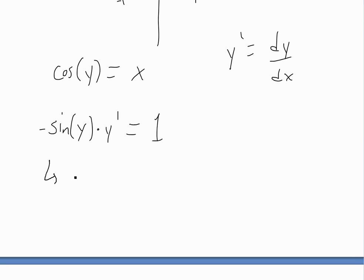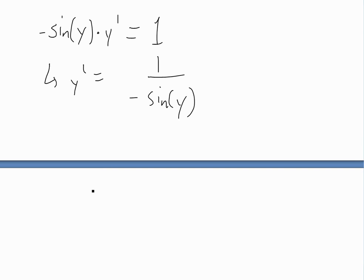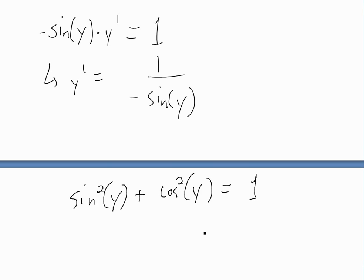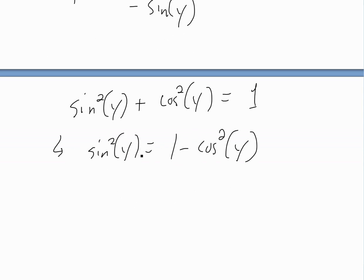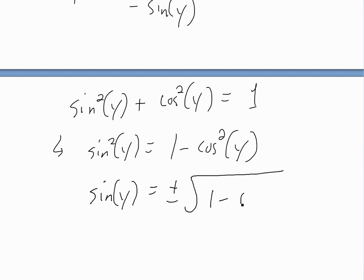So if we rearrange this, we'll get y prime is equal to one over negative sine y. And if you recall the trig identity where sine squared y plus cosine squared y equals one — see my other video linked below for the proof of this — we can rearrange for sine y. We get sine squared y is equal to one minus cosine squared y, and then taking the square root, sine y equals plus or minus the square root of one minus cosine squared y.